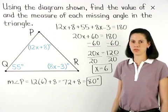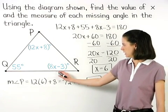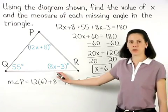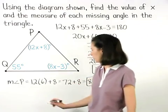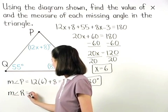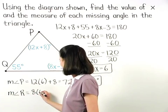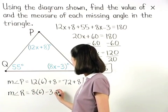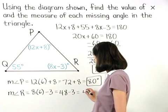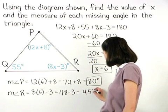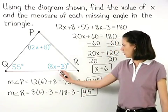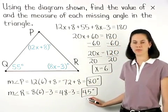The measure of angle R is 8x minus 3. If we plug 6 in for x, then for the measure of angle R we have 8 times 6 minus 3, which is 48 minus 3, or 45 degrees.